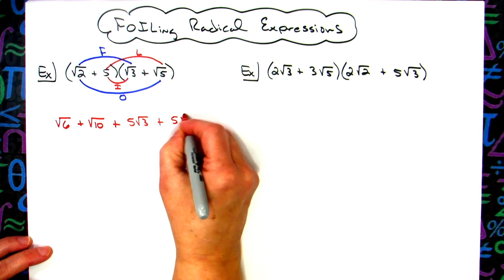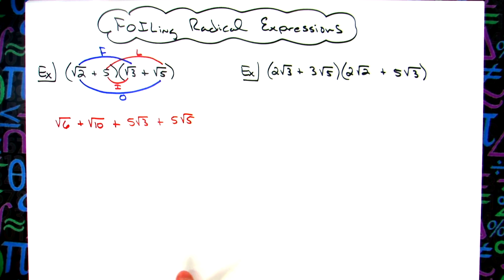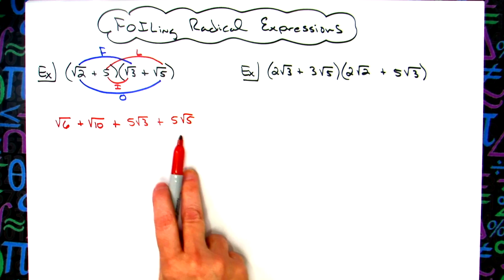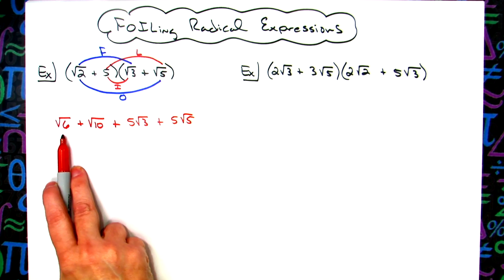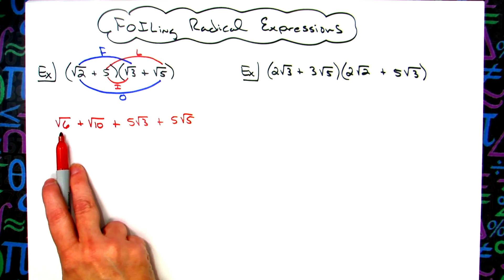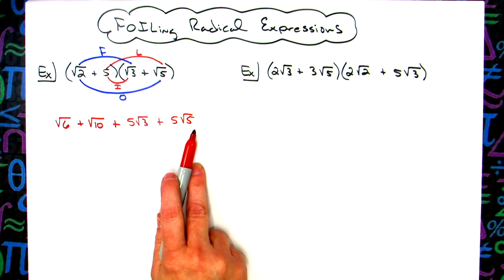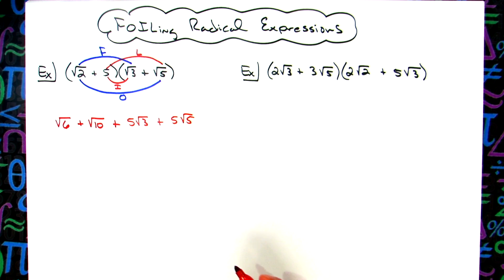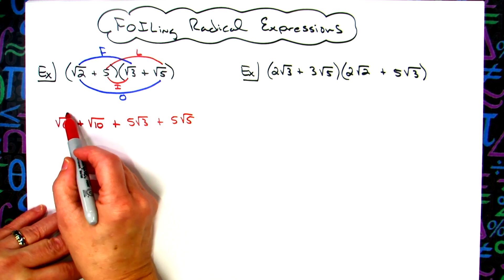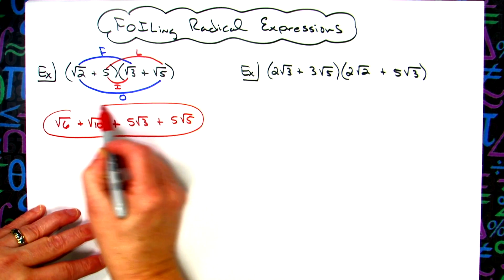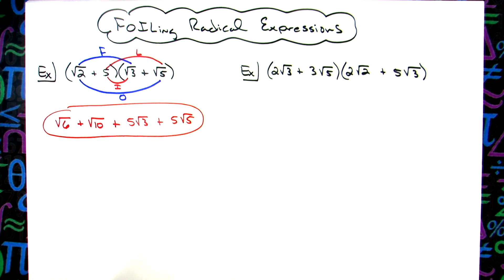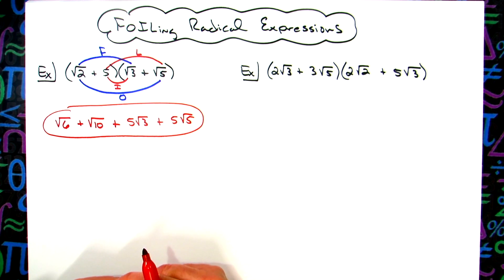Now I need to look at each one of those radicals and make sure I cannot simplify them — none of these can be simplified any further. I have no like radicals, so that is the answer. Sometimes yes, they're going to be long with four or three different terms. You might not have to simplify the radicals and you might not have to combine like terms.